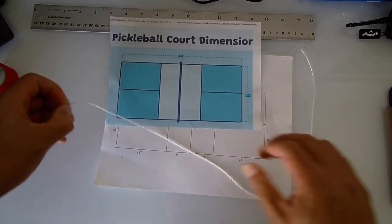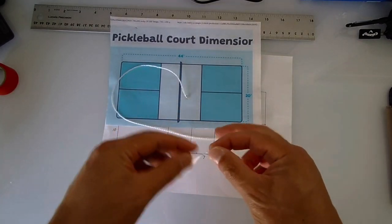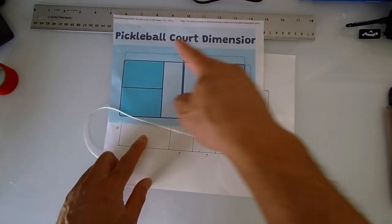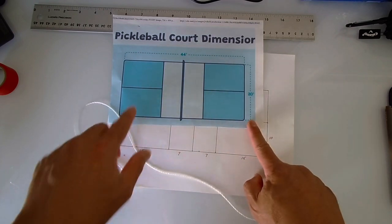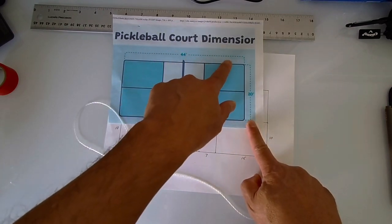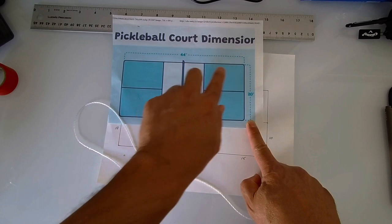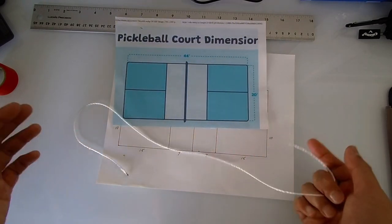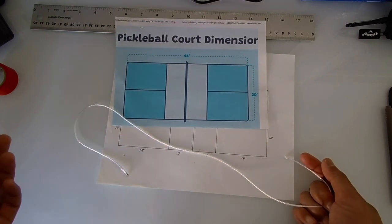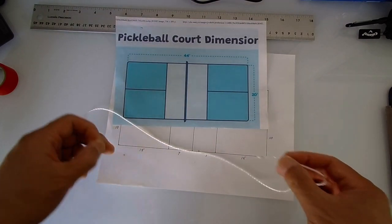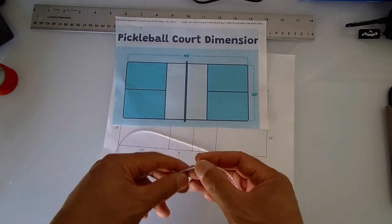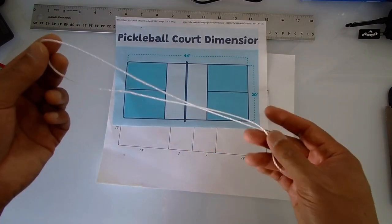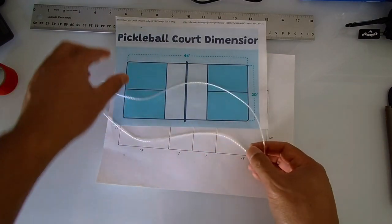All right, so you're going to need some string and you're going to need to cut the string to basically the whole perimeter of the court. So you're going to need 44 feet times 2, so that's 88, plus another 20 feet times 2, so 88 plus 40 is 128 feet. So you need 128 feet of line. So let's pretend this is 128 feet of line.